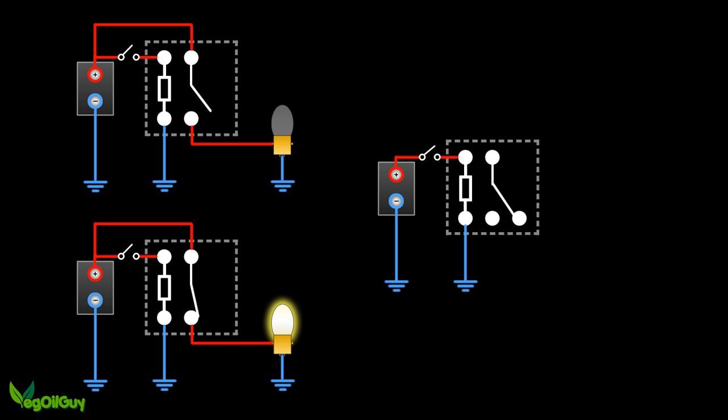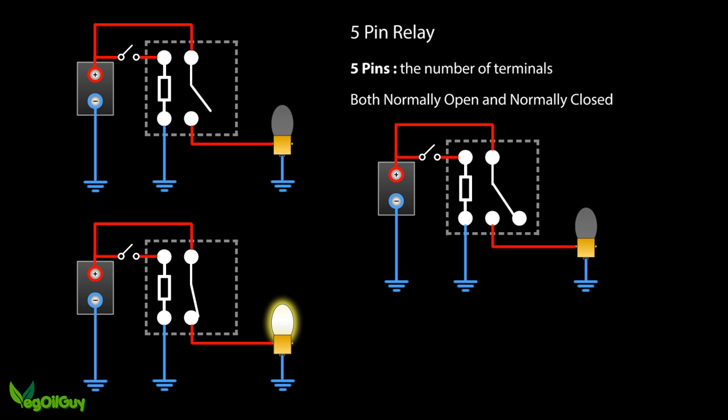The next variation is the 5 pin relay. As the name suggests, these simply have another terminal. However this extra terminal gives us a relay that is both normally open and normally closed. This is extremely useful. Personally I only tend to buy 5 pin relays as there's virtually no price difference between a 4 and a 5 pin and a 5 pin can do everything a 4 pin can and a little bit more. For instance, let's have a 5 pin relay to light the same sort of bulb circuit that we saw with the 4 pin relay. Close the master switch and the bulb is lit. Open the master switch and off the bulb goes.